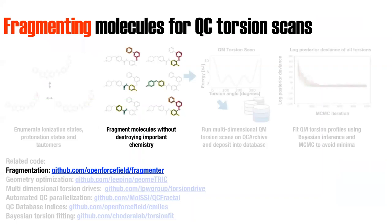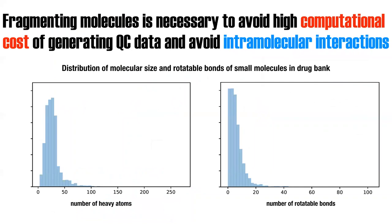Now we can talk about science. I'm going to talk about fragmenting molecules for quantum chemical torsion scans. Why do we need to fragment molecules? Number one is expense — torsion scans are expensive, requiring many geometry optimizations. Looking at the distribution of drug-like molecules in DrugBank, these calculations grow depending on the level of theory, anywhere from N³ to N⁶, so you want to minimize the number of heavy atoms in your molecule.